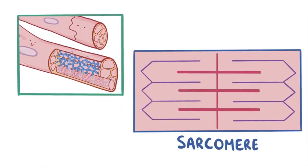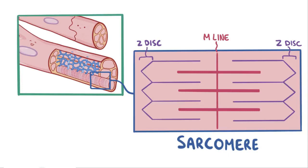The sarcomere is the smallest structure in the muscle that's capable of contracting, so it's considered the basic contractile unit of the muscle. The sarcomere has two Z-discs that form its boundary and an M-line in the middle.